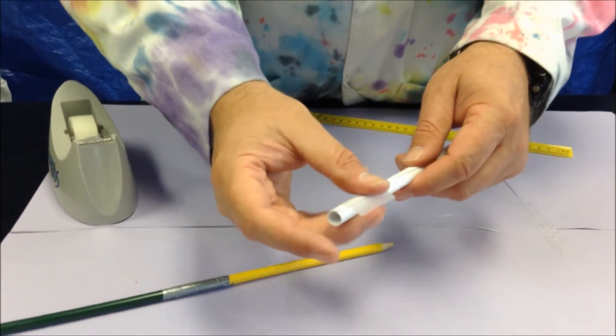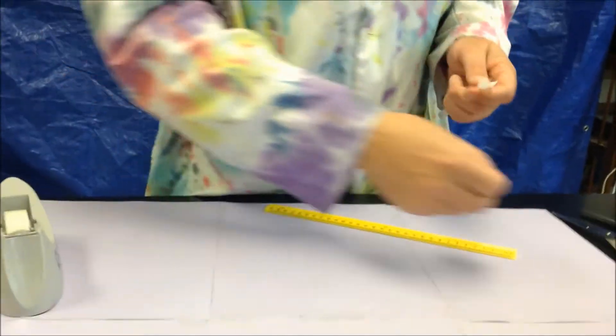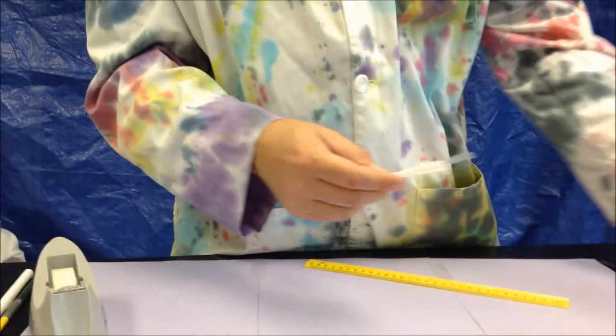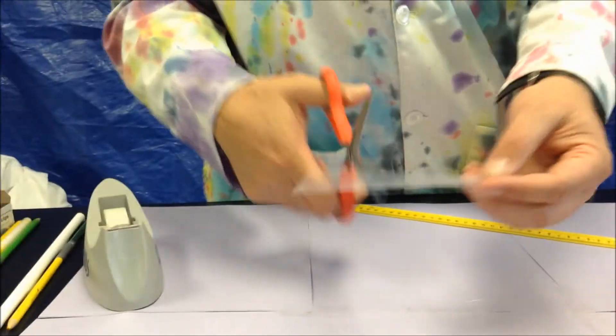Okay, the next step, you want to get your straw. This part is really quite simple. You don't need to measure this, it doesn't need to be exact measurements or anything like that. The first thing you're going to do is just take your straw and cut it into two halves.